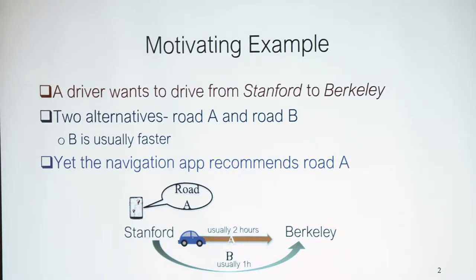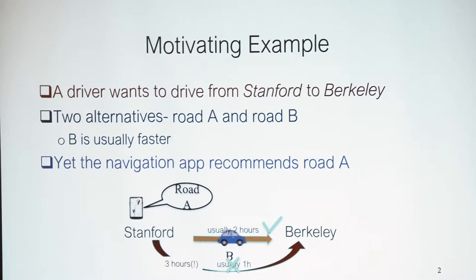But when you open up your navigation app, it suddenly tells you to drive on Road A. I usually follow recommendations from the navigation app — not just to avoid getting lost. The app knows something I don't: it knows the current delays on the road, which in our case might be a bit different than usual.